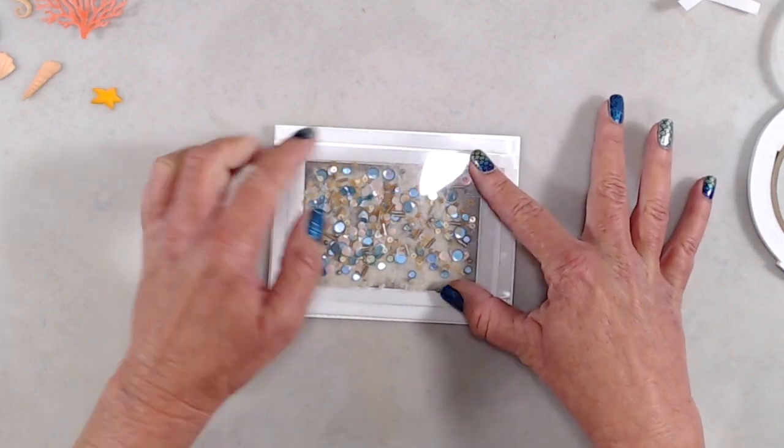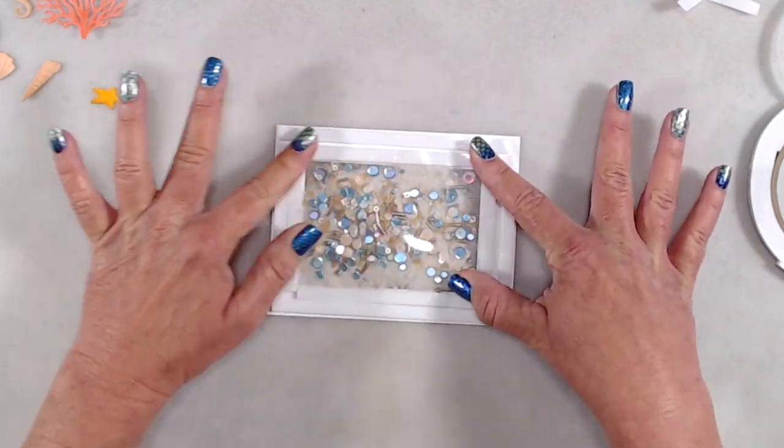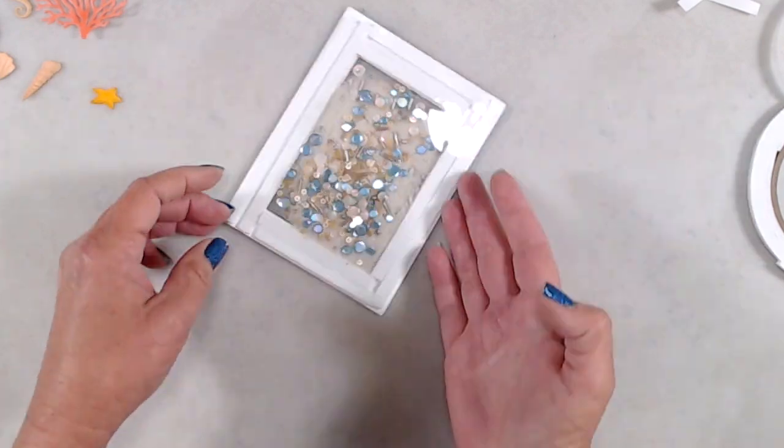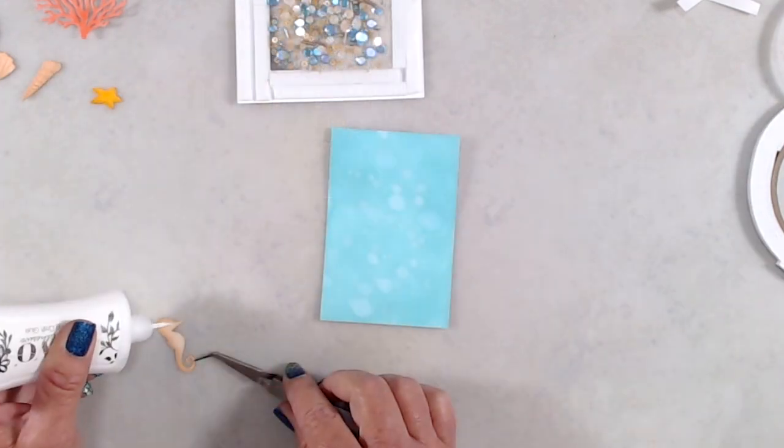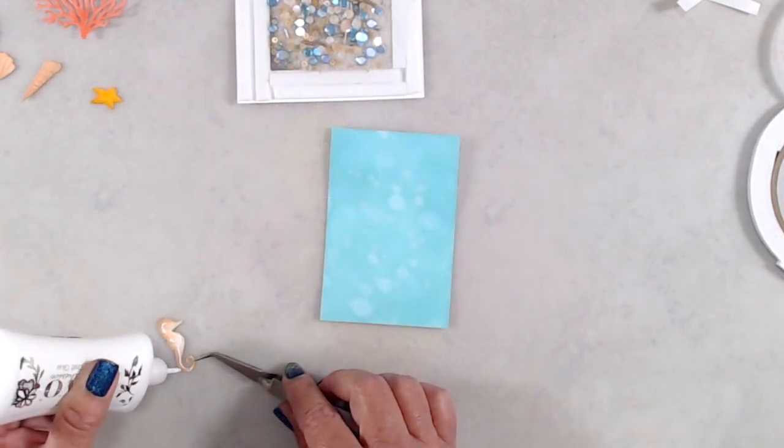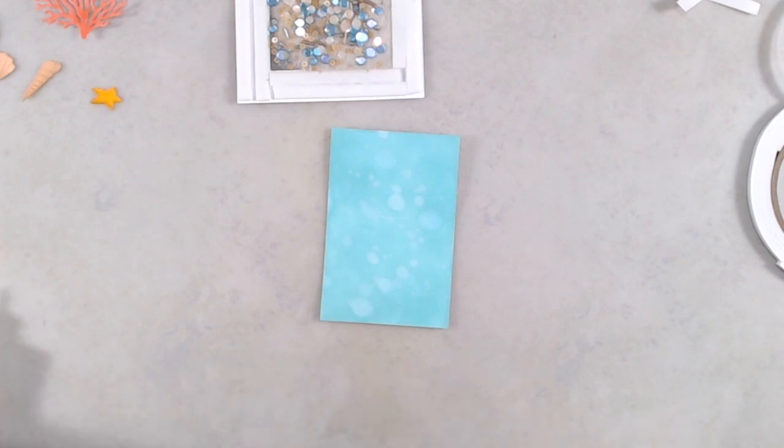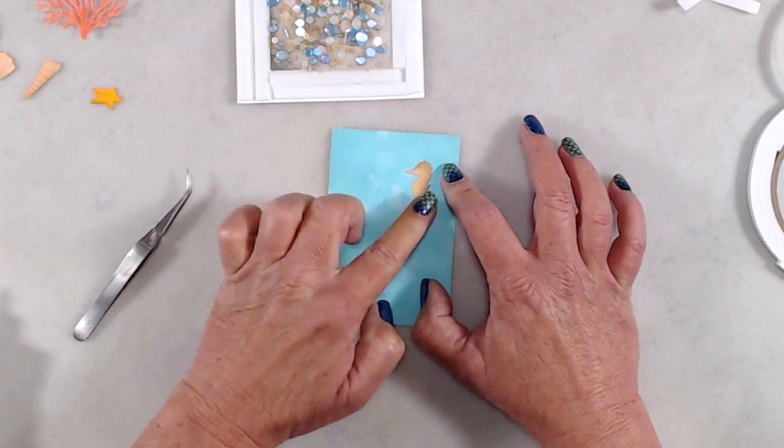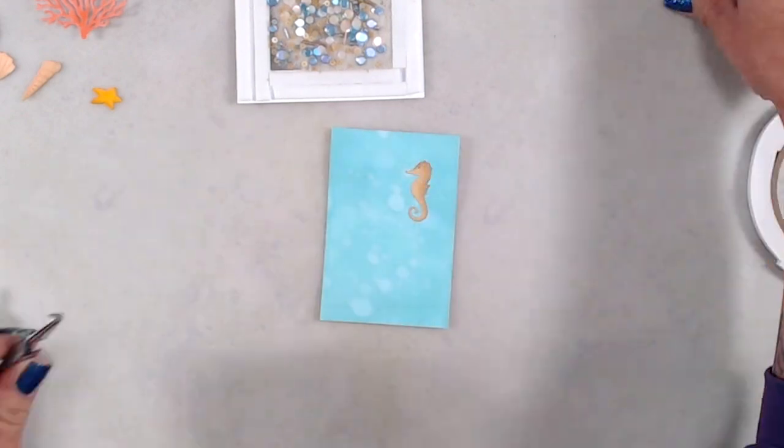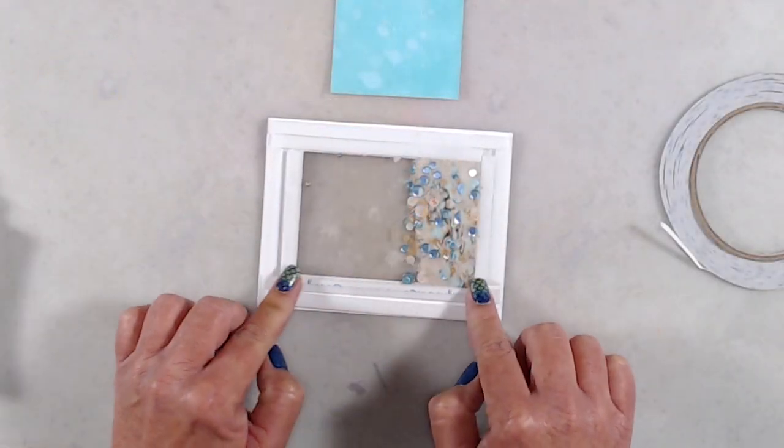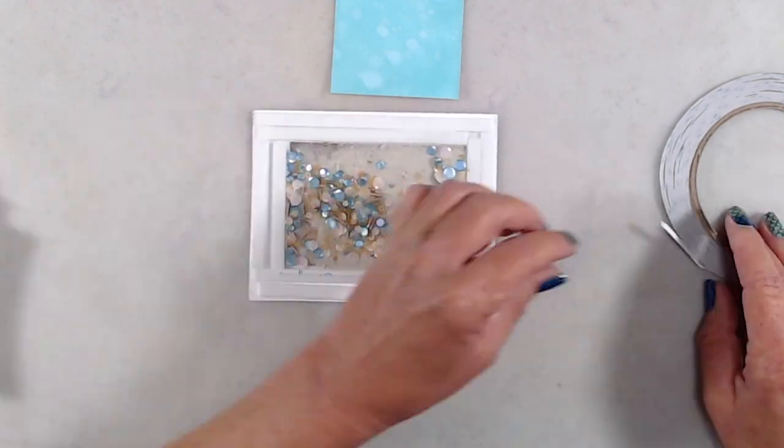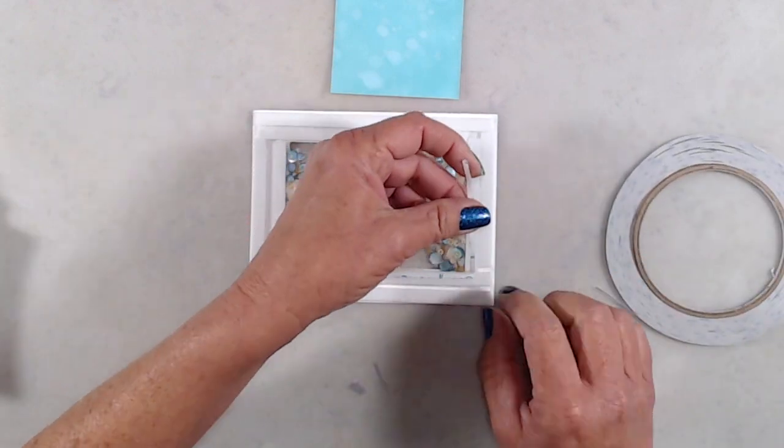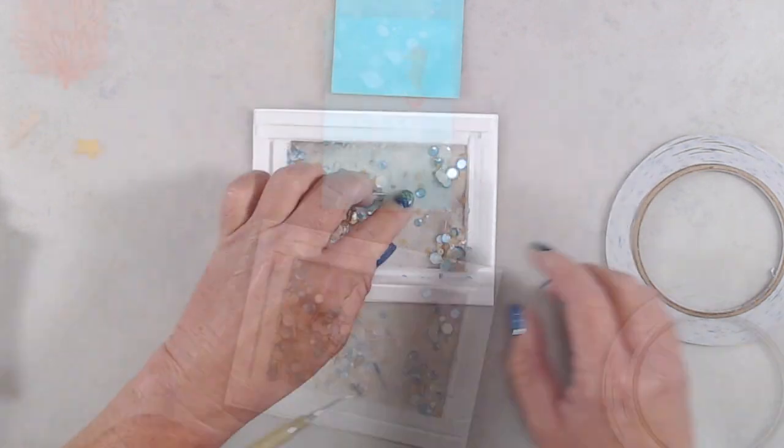The reason I did that is because I wanted to have a little seahorse in the window, but because I used liquid glue to adhere the seahorse on my ink-blended panel, I wanted to make sure that I didn't get sand stuck around the seahorse. So by adding that extra layer of acetate, I was able to add in the panel with the seahorse and not have to worry about sand and stuff getting stuck around the seahorse.